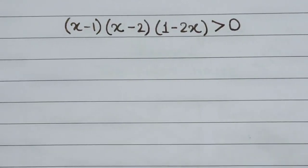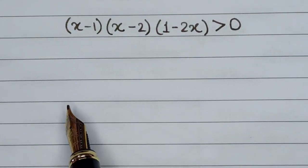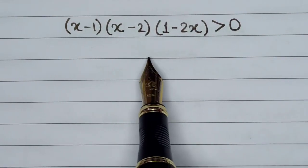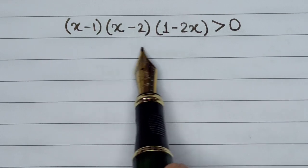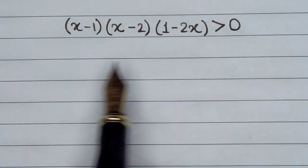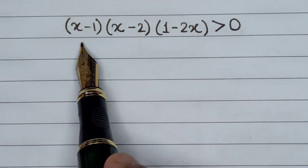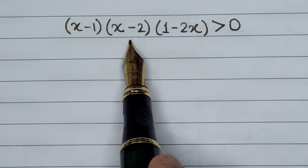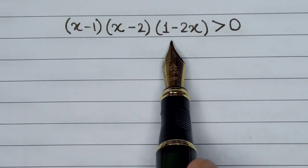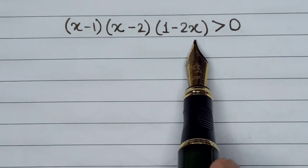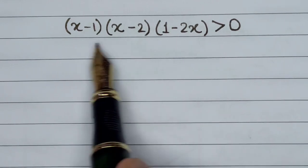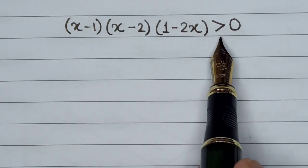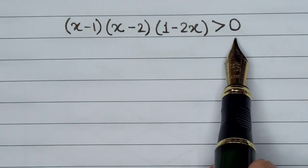Hello everyone, welcome to our YouTube channel. Today we are going to solve a very interesting maths problem: (x minus 1) into (x minus 2) into (1 minus 2x) and all these numbers multiplied are greater than 0.